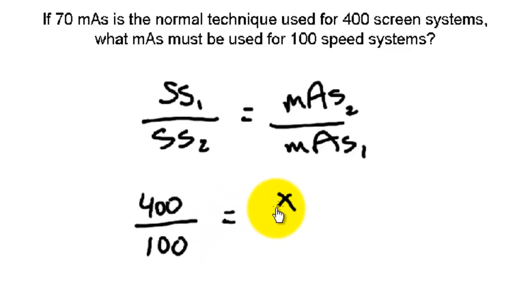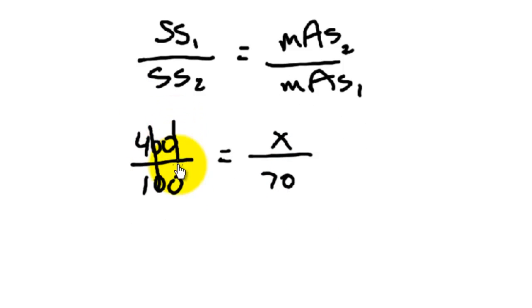mAs 2 is X, we're looking for the new value mAs over mAs 1, which is 70. So we can reduce 4 over 1, 70 times 4 is 280 mAs.